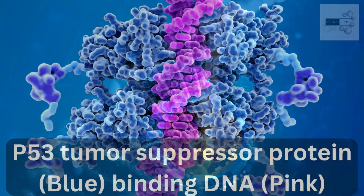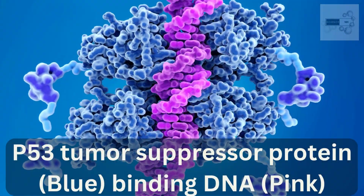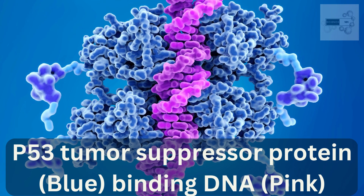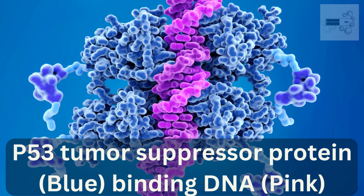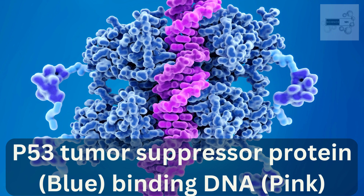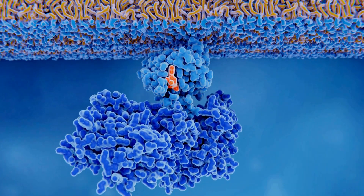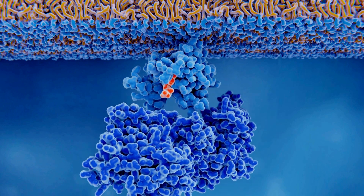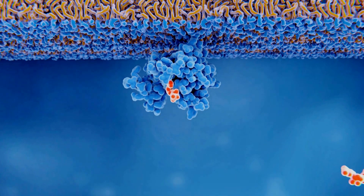Tumor suppressor genes and oncogenes are two types of genes that play a role in cancer development. Tumor suppressor genes help to prevent the development of cancer by regulating the cell cycle and repairing damaged DNA. Oncogenes promote cell growth and division and can lead to the development of cancer when mutated.